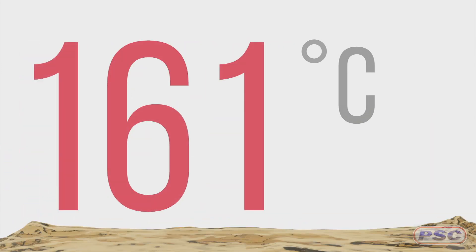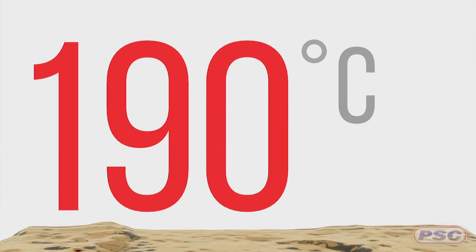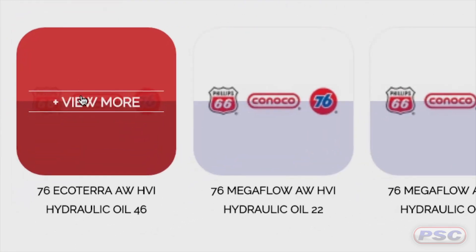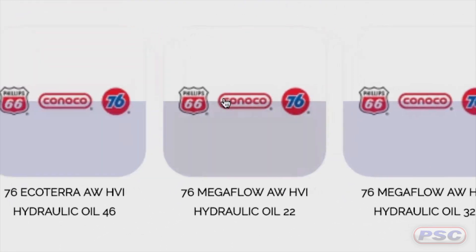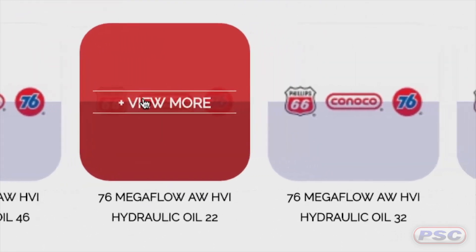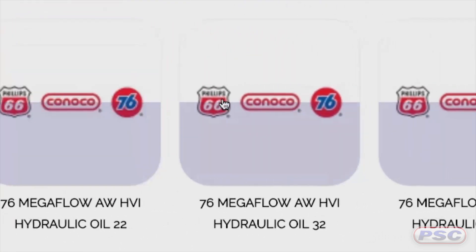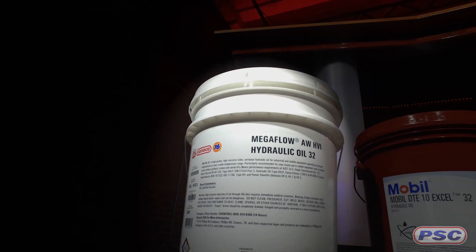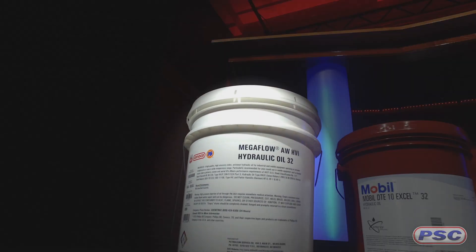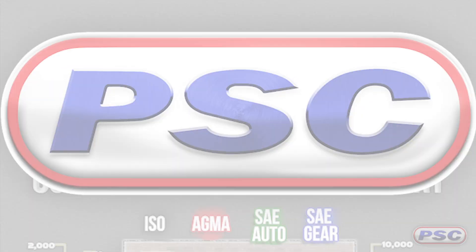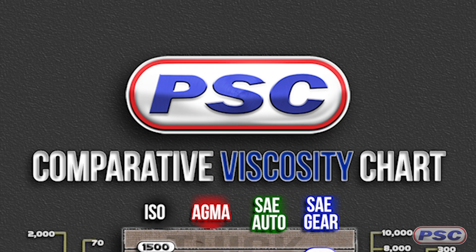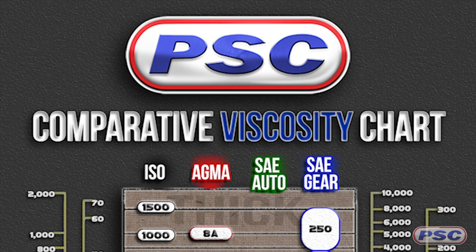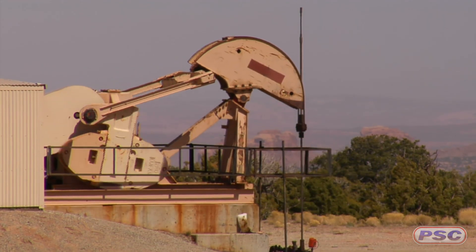The wider the temperature range, the higher the viscosity index number. Products that maintain their viscosity over a wide temperature range are referred to as high viscosity index products. Viscosity index numbers are improved by different means.